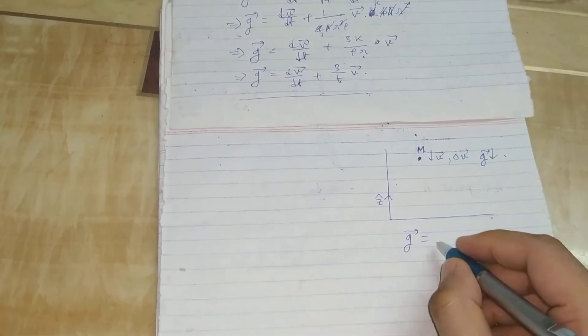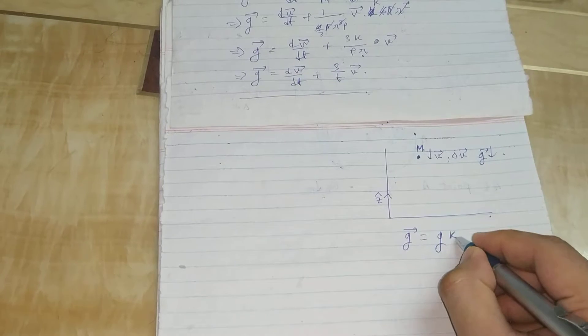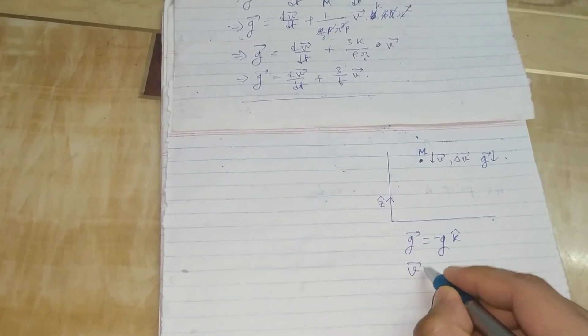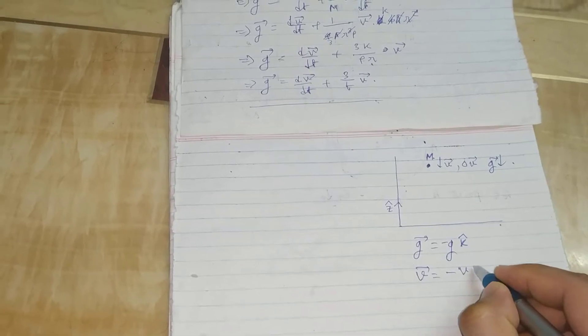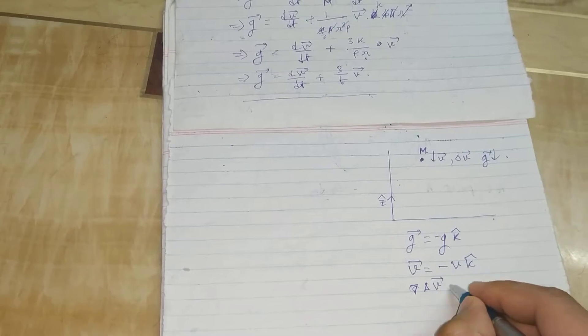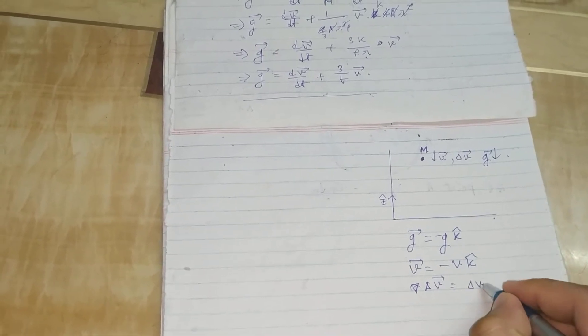This is k-cap, which is the unit vector vertically upward, and this is the ground. So we can write this g vector as -g k-cap, this v vector as -v k-cap, and this instantaneous dv/dt as (dv/dt) k-cap.